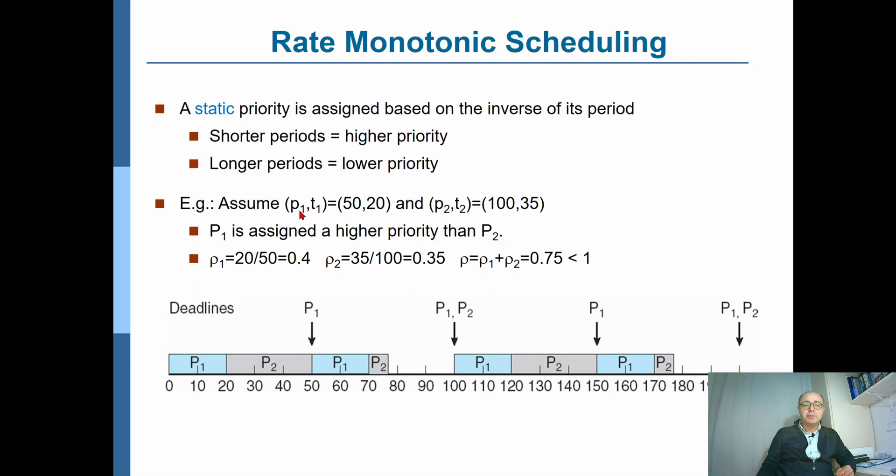P1 appearing with period P1 and execution time, the time required to execute that instance of the process, is T1, giving us 50 and 20 seconds, for example, or milliseconds.